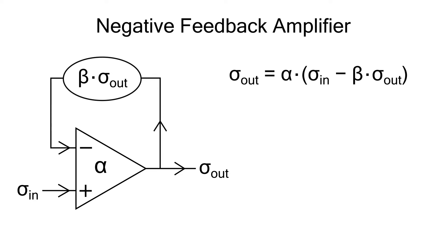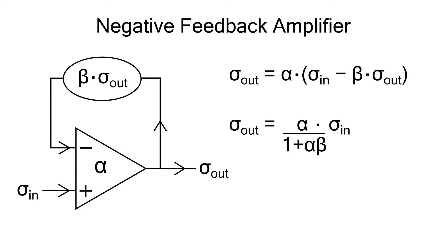If you rearrange and collect the sigma-out term, you get a very simple gain equation for a negative feedback amplifier. The gain has been reduced by a factor of 1 plus alpha·beta, and that 1 plus alpha·beta is the amount of negative feedback in the circuit.